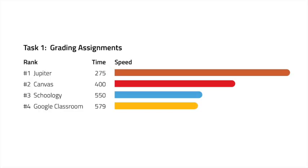Here again are the results. The speed graph is simply the inverse of time. Note that we are counting only required steps — nothing optional — and we're using any available shortcuts to get the fastest results for each app. And while some apps had slower server lag time, we did not count that.